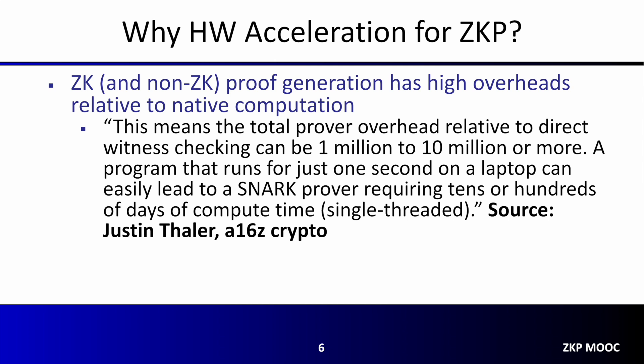So why do we need to accelerate zero-knowledge proofs? The key reason is the high overhead of proof generation. While proof verification is important and will increasingly become a focus as ZKPs are deployed at scale, the computations of generating the proof are currently the bottleneck. One estimate by Justin Thaler, one of the instructors of this course, is that ZK proof generation can be 1 million to 10 million or more times as expensive as performing the computation natively.